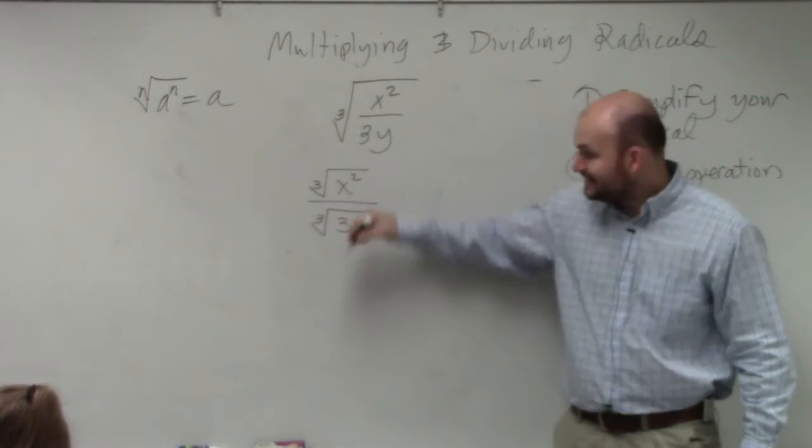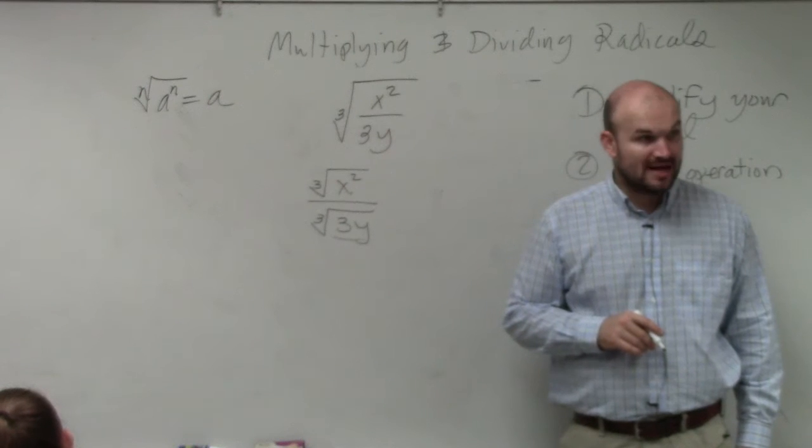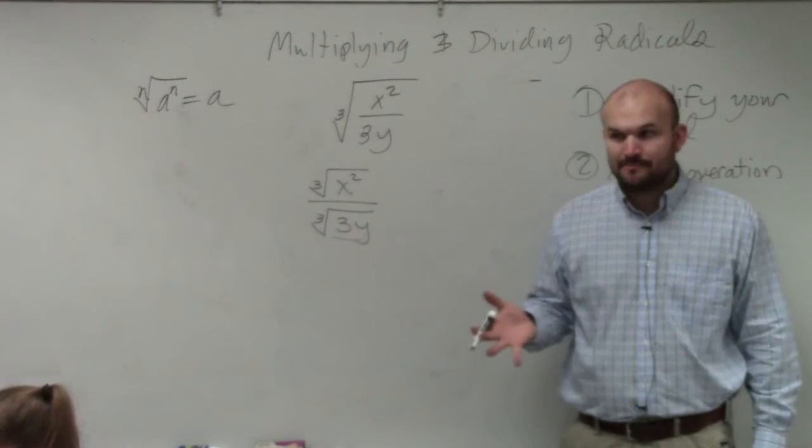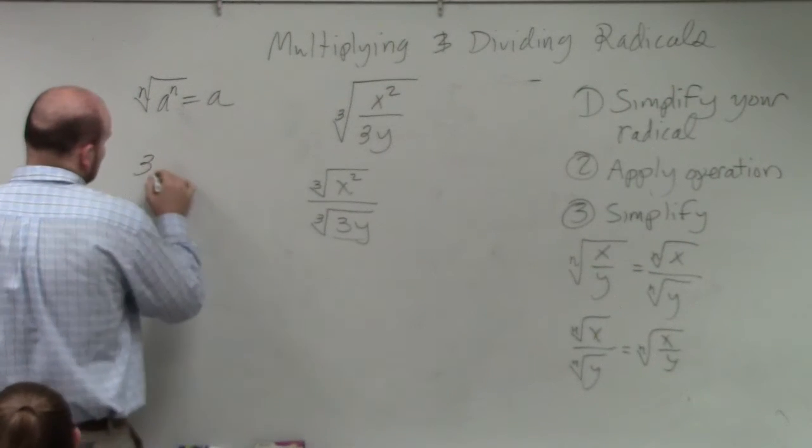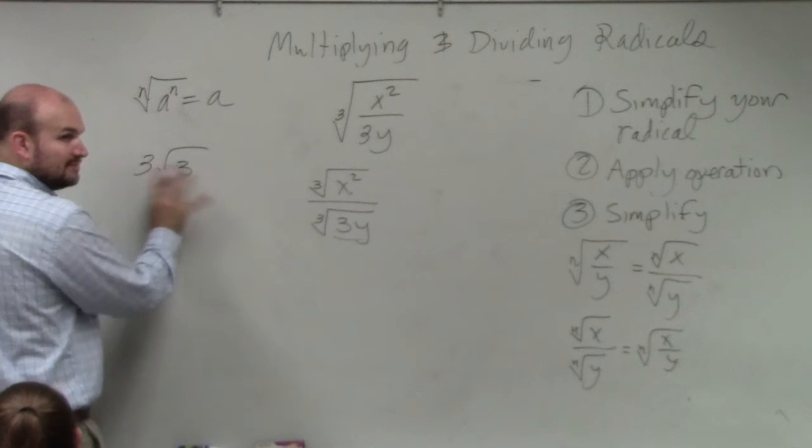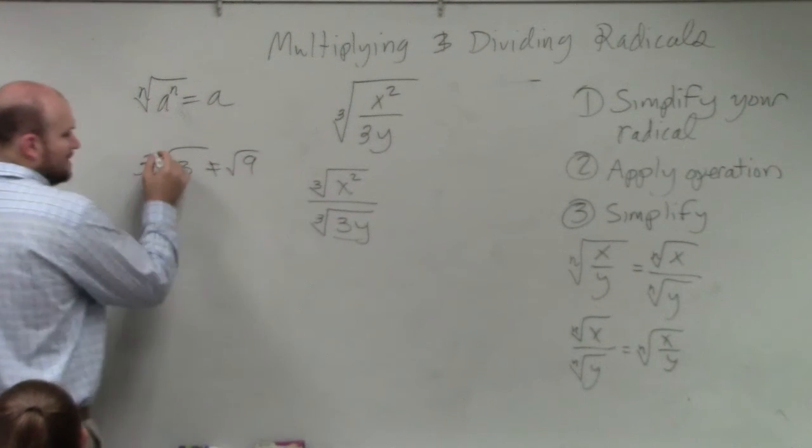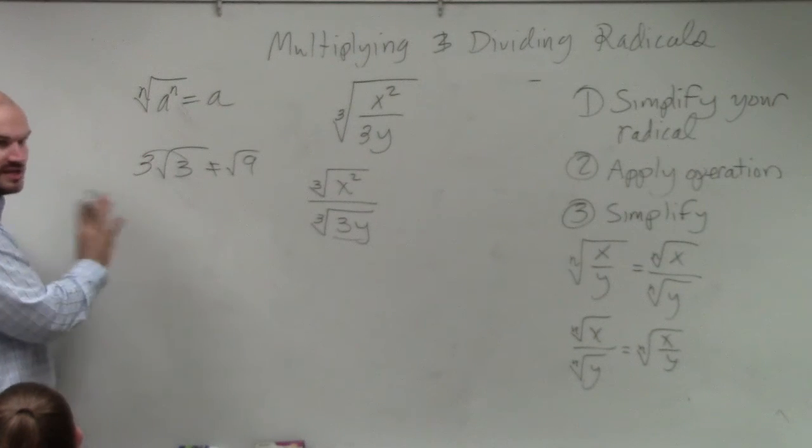So we look at our index. And we say, all right, I need to get this raised to the third power. Correct? I need to multiply this so it's raised to the third power. Now, you cannot multiply. If I did 3 times the square root of 3, that's it. Done. It does not equal the square root of 9. You can't multiply a number outside of a radical inside of a radical. Doesn't work.